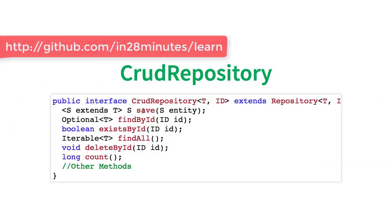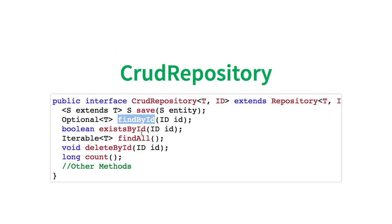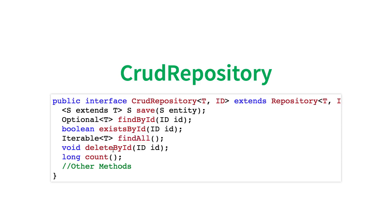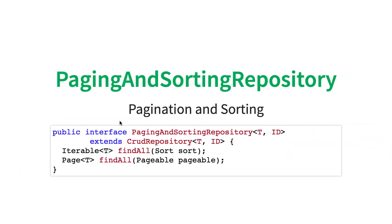CRUD stands for Create, Read, Update and Delete. This CRUD repository provides all the features you would need to insert, update, delete, and get the details of a student. All you need to specify is the class and the primary key. Once you do that, you get a lot of features — find by ID, check if a student exists with a specific ID, find all, delete by ID, and a wide variety of other methods. There is also a paging and sorting repository which you can extend if you need pagination and sorting.